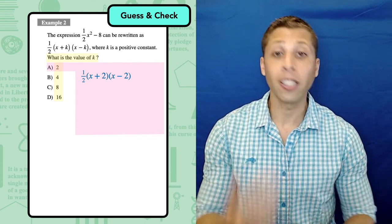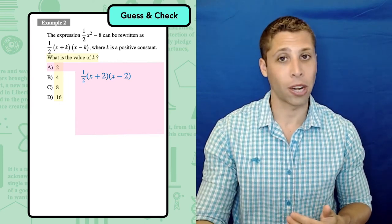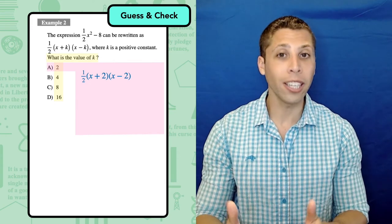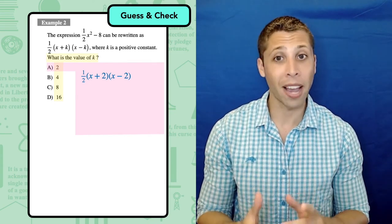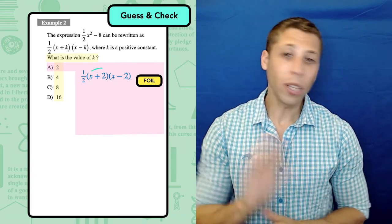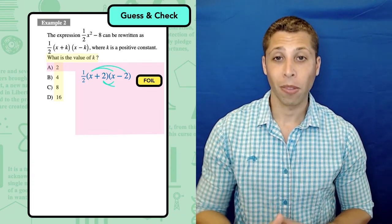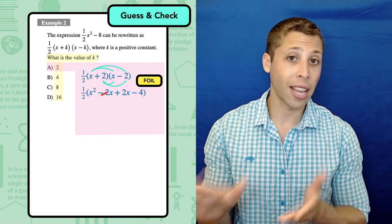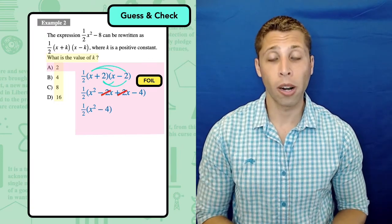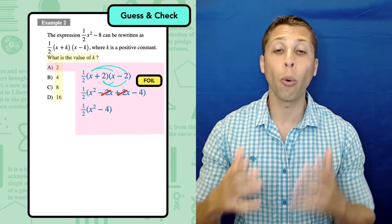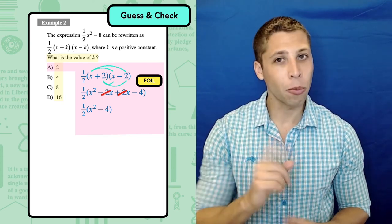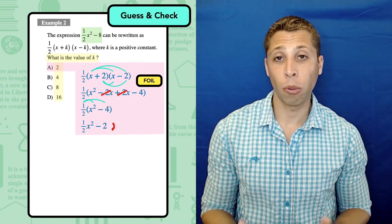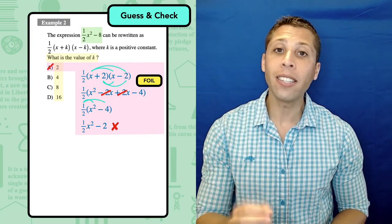This is definitely an improvement, since FOILing is easier than factoring, especially when we have that one half in the beginning, which kind of makes me nervous. We can leave it aside for a second and just do the FOILing. We get x squared minus 2x plus 2x minus 4. The middle terms cancel out, and we are left with x squared minus 4, which you might recognize as difference of 2 squares or dots factoring. But don't forget about the one half, which now gets distributed to both parts, and that makes the problem obvious. One half of 4 is 2, not 8. We FOILed, but we didn't get the expression that we were supposed to.